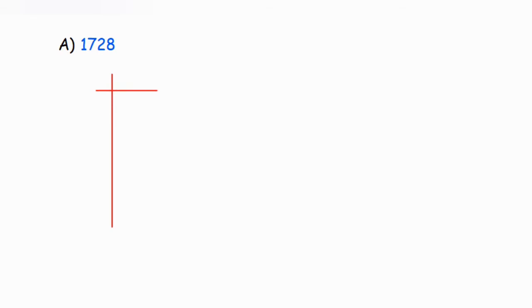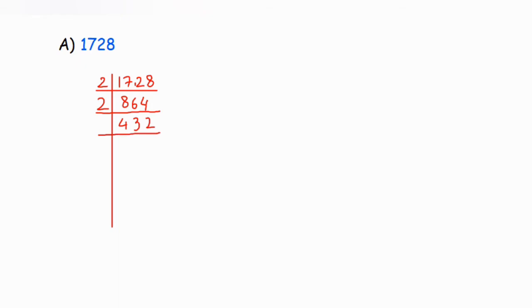The first step is to find the prime factorization of the given number, 1728. Since it's an even number, we start dividing by 2. Dividing repeatedly by 2: 1728 ÷ 2 = 864, then 864 ÷ 2 = 432, then 432 ÷ 2 = 216, and 216 ÷ 2 = 108.